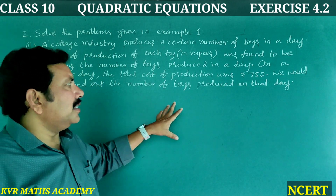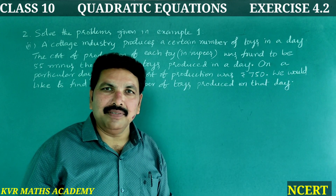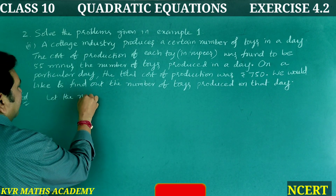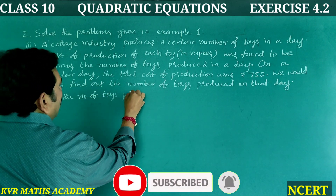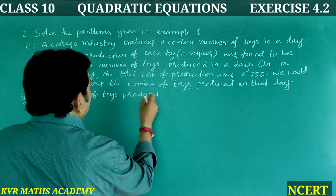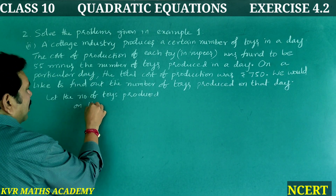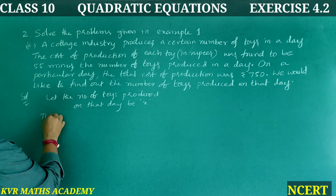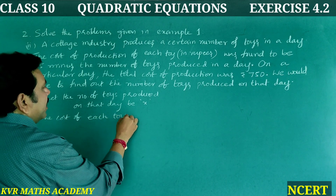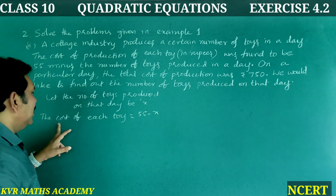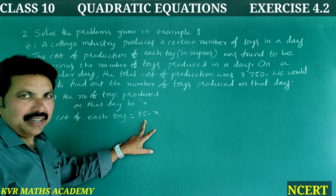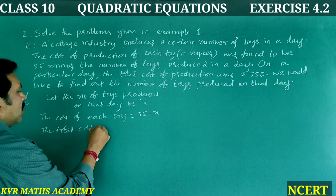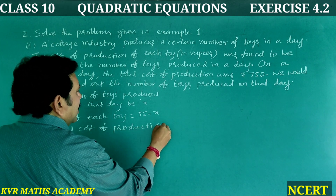Solution: Let the number of toys produced on that day be x. According to the problem, the cost of each toy is equal to 55 minus x. The total cost of production is equal to x times (55 minus x), which equals 750.